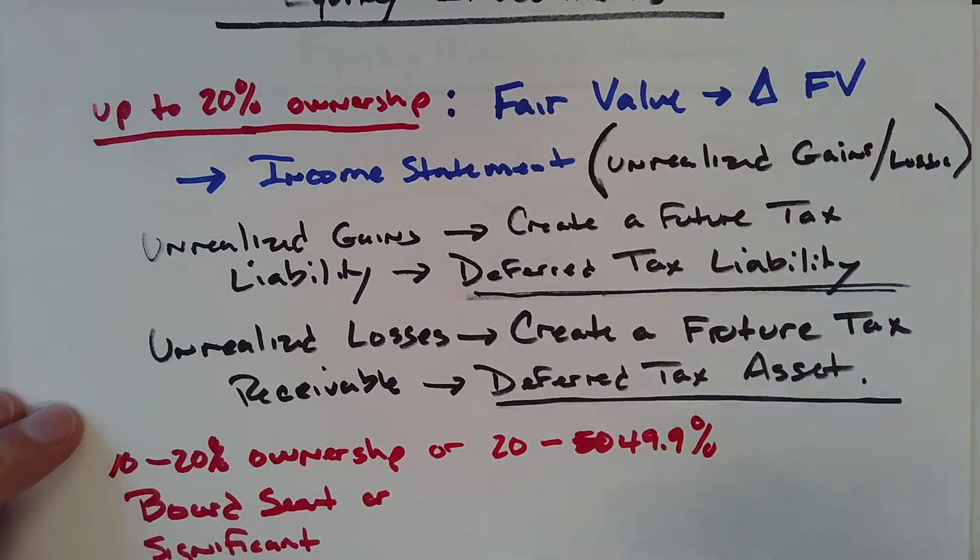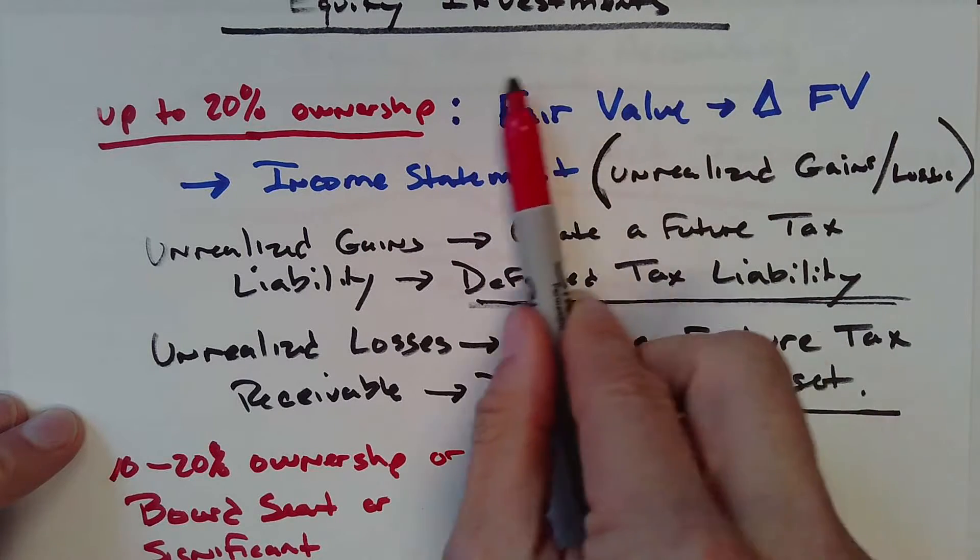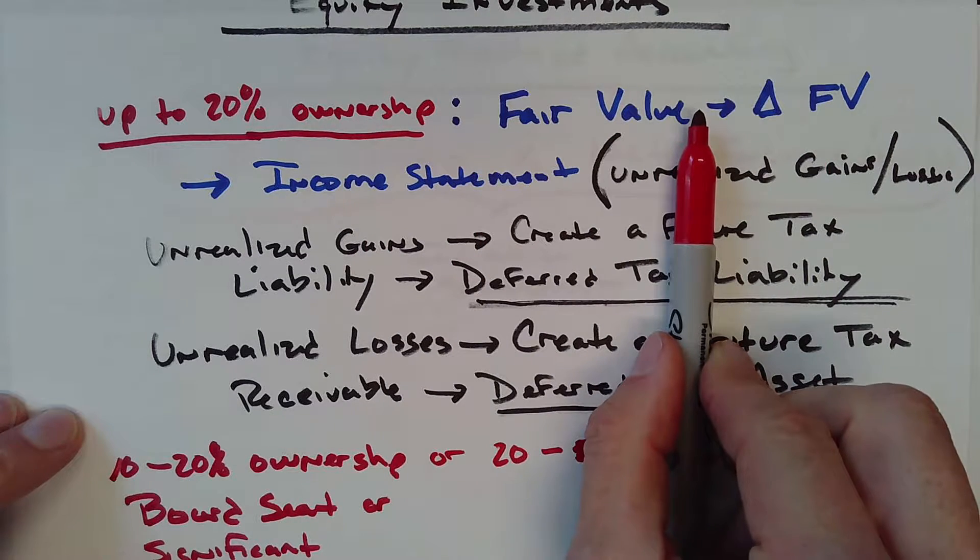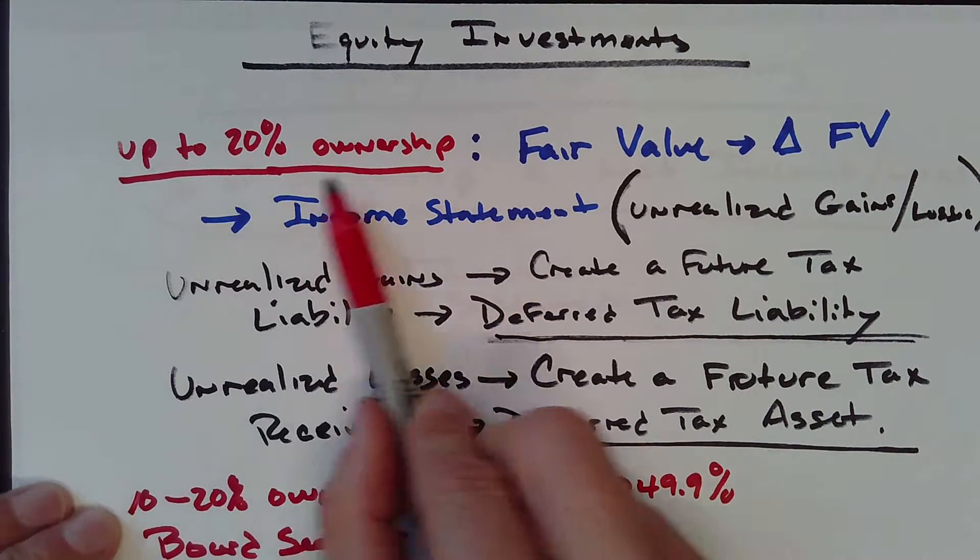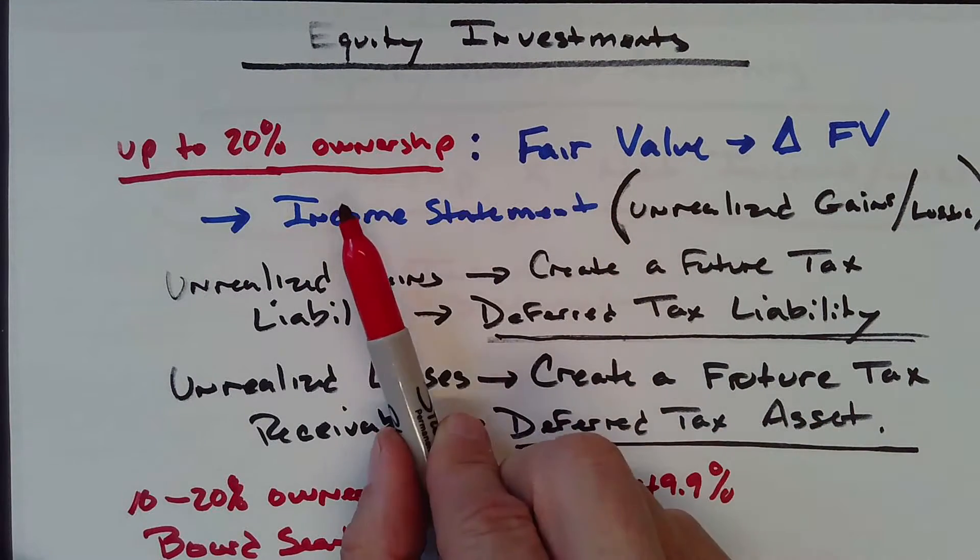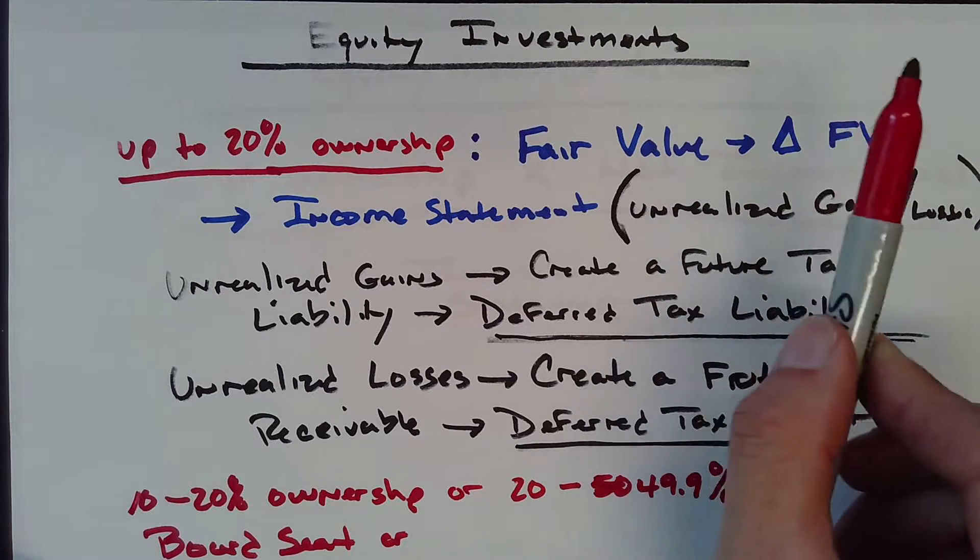Whereas with fair value method, I'm just recognizing whatever the change in fair value is. If this equity investment paid me dividends, I would just recognize dividend income, cash and dividend income.